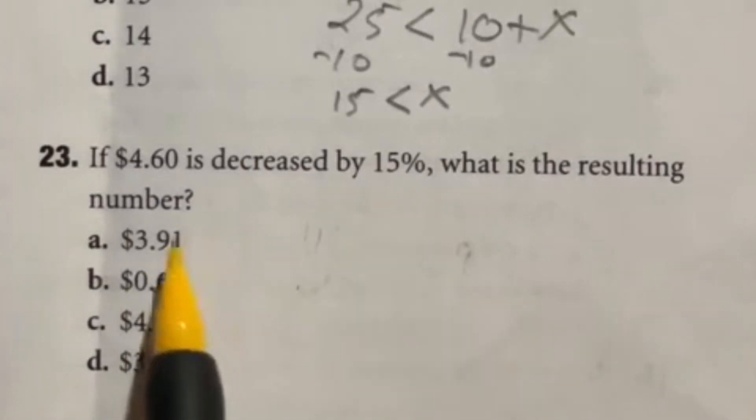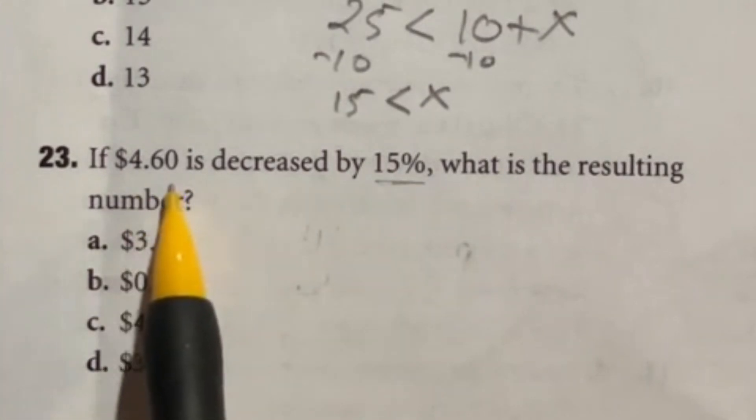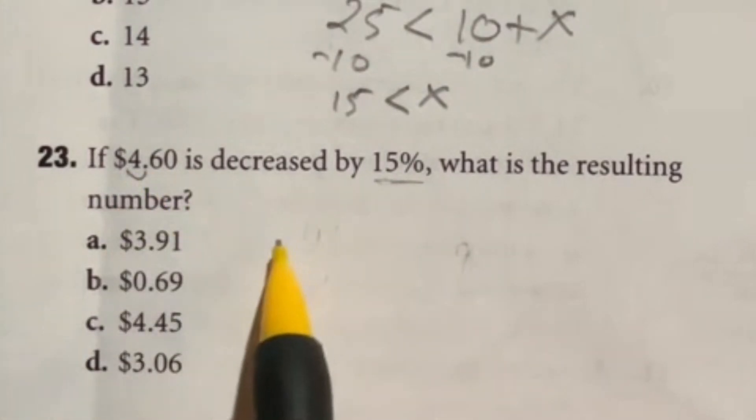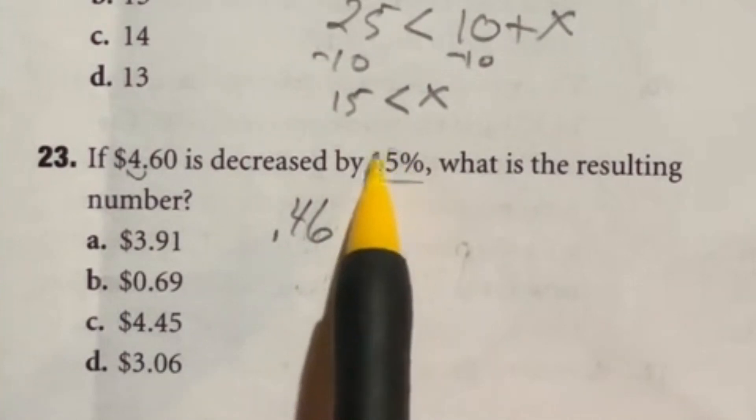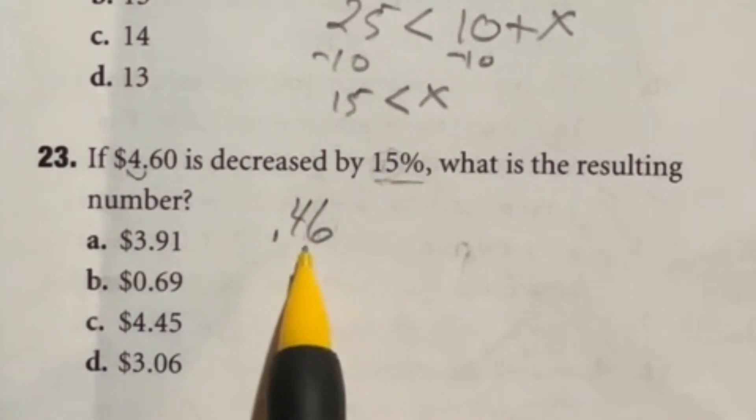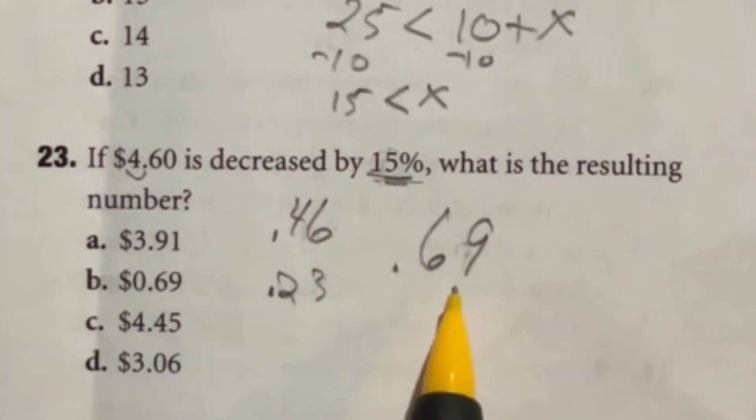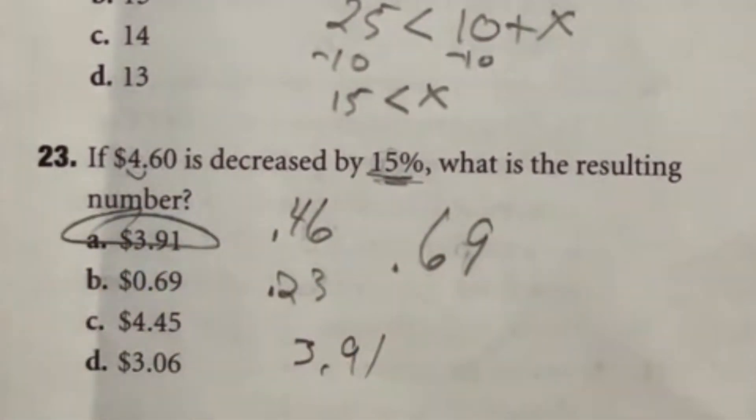So this question says that we have to take $4.60 and decrease it by 15%. The first step is going to be finding out what 15% of this is and then subtracting it from that number. So let's break down this 15% into two pieces, 10% and 5%. 10% is easy because you just move the decimal place to the left once, giving me 46 cents. Now, what about that other 5% to make up the total 15%? Well, 5% would be half of 10%. So that would be half of this guy, which is 23. So if I add the two of these together, the total for 15% would be 69 cents. So 15% is 69 cents. Subtract that from here and you end up with $3.91, which will be the total for A.